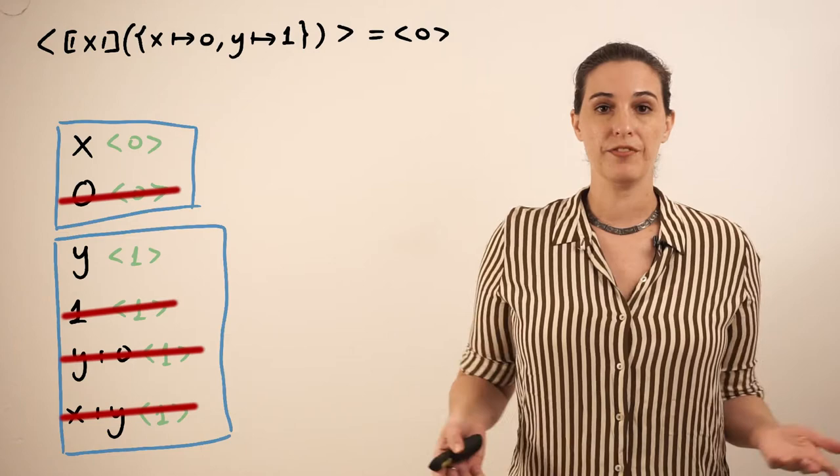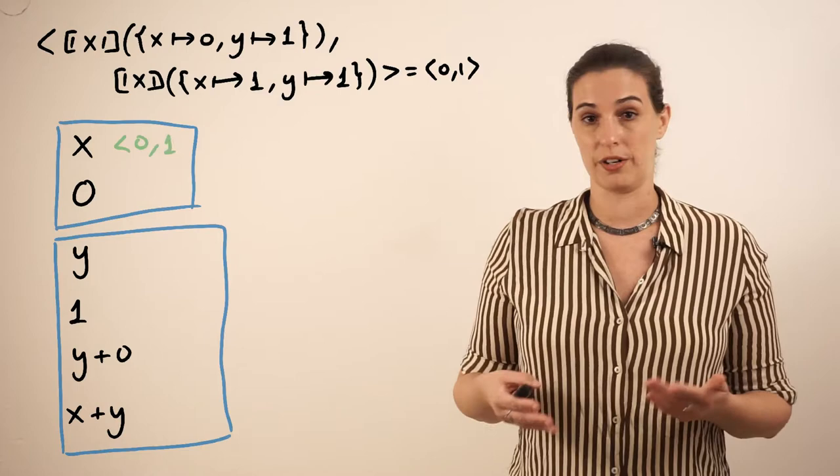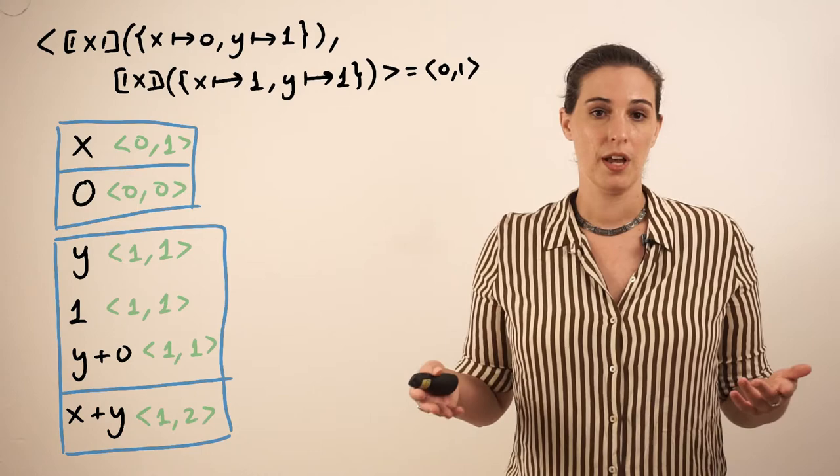However, if we now add another example where, let's say, x is 1 and y is 1, this refines our equivalence relation by adding another output and makes x no longer equivalent to 0 and x plus y no longer equivalent to y and y plus 0. So refining our equivalence relation means we'll see more programs.